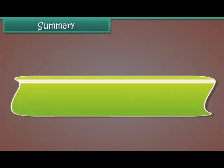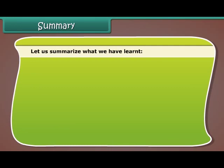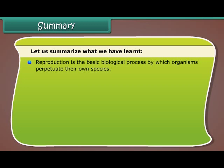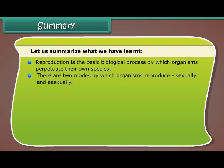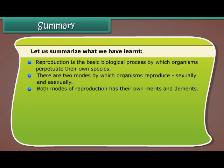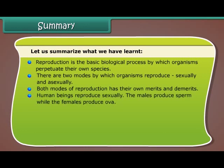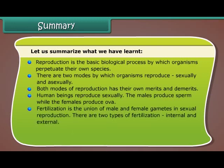Summary. Reproduction is the basic biological process by which organisms perpetuate their own species. There are two modes by which organisms reproduce: sexually and asexually. Both modes of reproduction have their own merits and demerits. Human beings reproduce sexually — males produce sperm while females produce ova. Fertilization is the union of male and female gametes in sexual reproduction, and there are two types: internal and external.